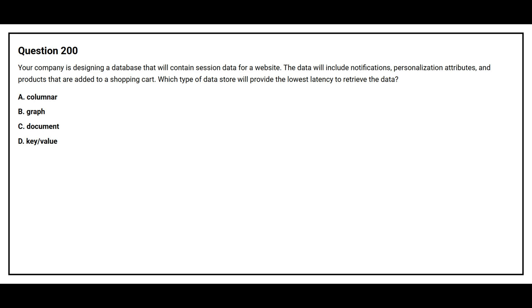Question number 200. Your company is designing a database that will contain session data for a website. The data will include notifications, personalization attributes, and products added to a shopping cart. Which type of data store will provide the lowest latency to retrieve the data? Option A: Columnar. Option B: Graph. Option C: Document. Option D: Key-value. The correct answer is Option A: Columnar.